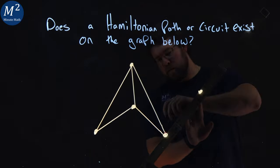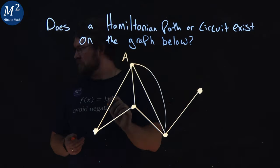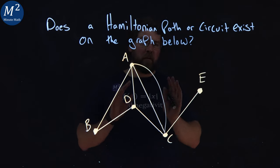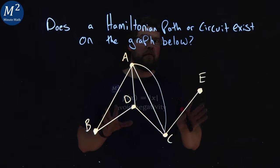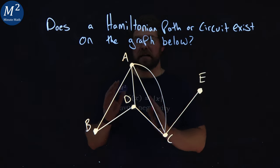Does a Hamiltonian path or circuit exist on the graph below? I know right off the bat from looking at this graph that a Hamiltonian circuit does not exist.